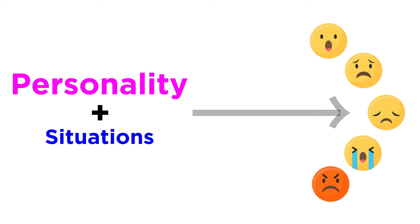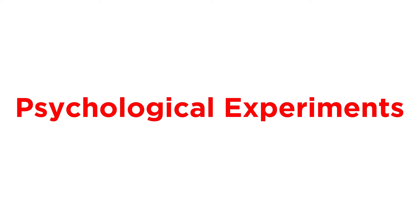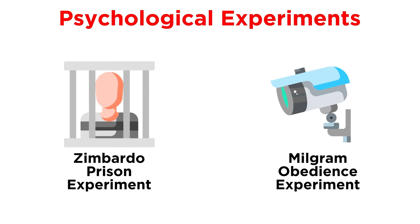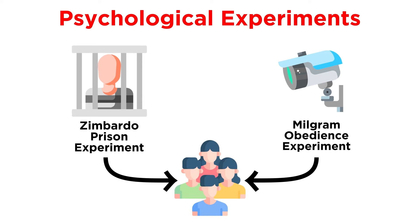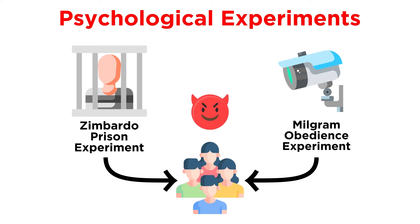Both our personality and the situations we find ourselves in ultimately work together to influence our behavior. Let's take a closer look at this idea using two famous psychological experiments: the Zimbardo Prison Experiment and the Milgram Obedience Experiment. In both of these, the immediate social situation shaped the behavior of participants, overwhelming their plans, intentions, and even their most stable personality traits. The situation of the experiment made people more likely to do bad things.